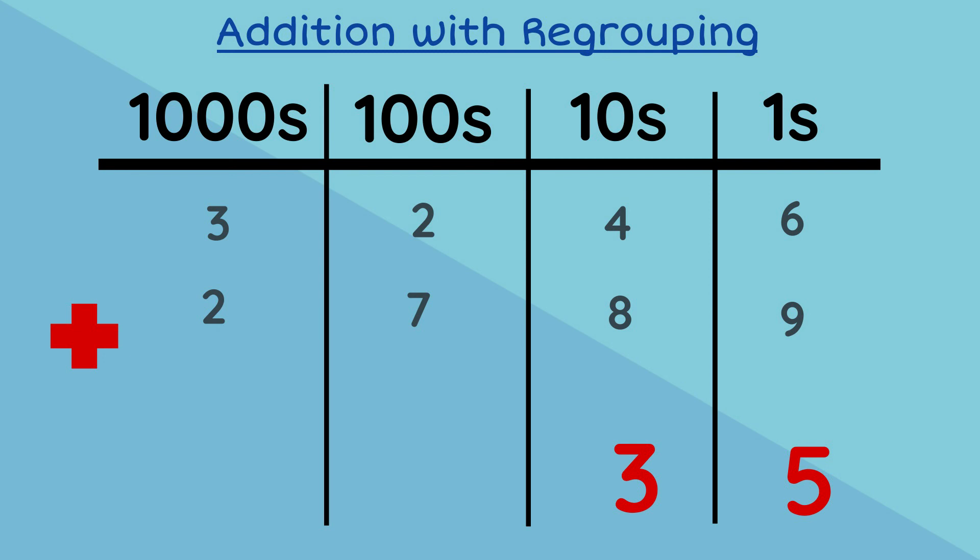In our hundreds column, we now have seven plus two plus one, which would give us ten. Now we must regroup. Zero goes in the answer space of the column we are adding and one goes over to the thousands.